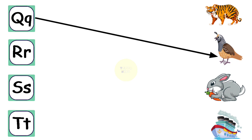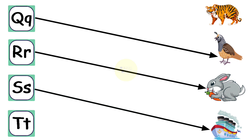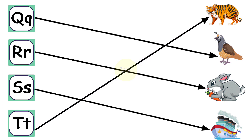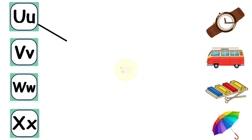Q for Quail, R for Rabbit, S for Ship, T for Tiger, U for Umbrella.